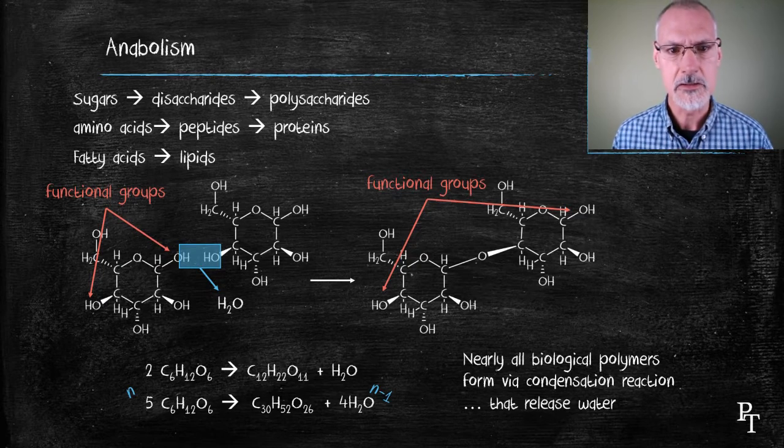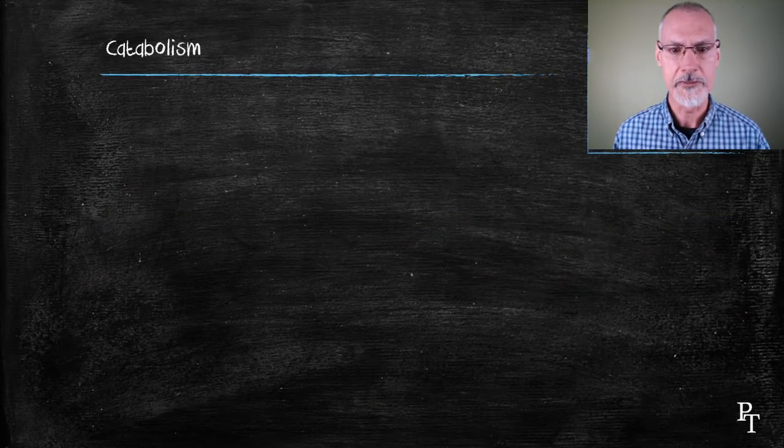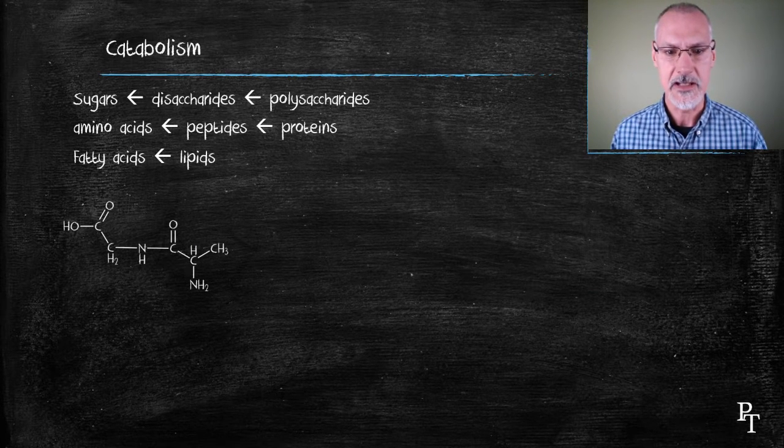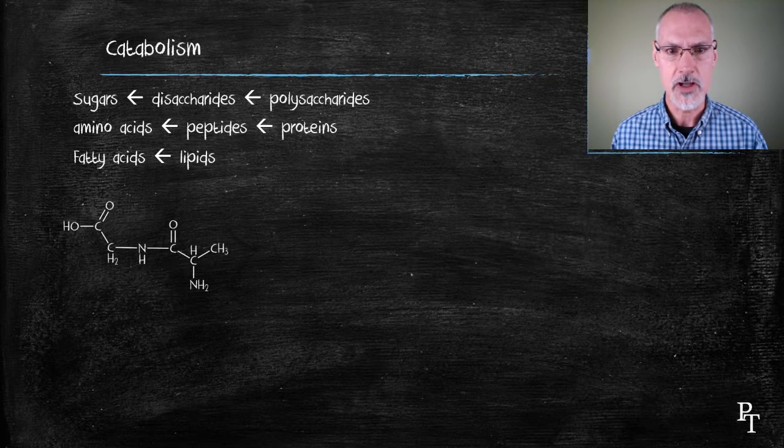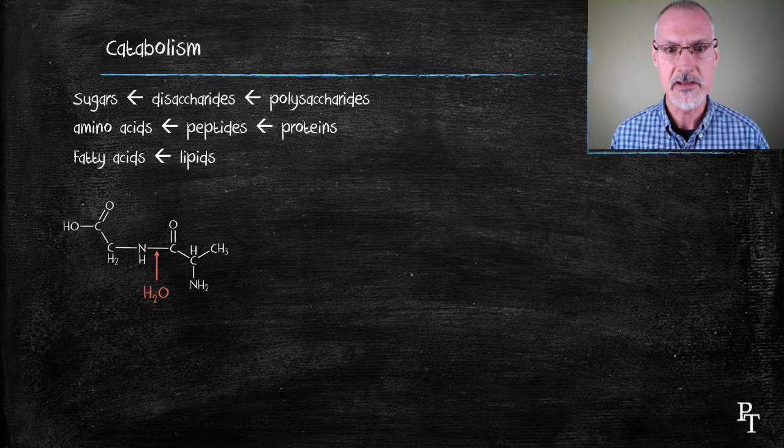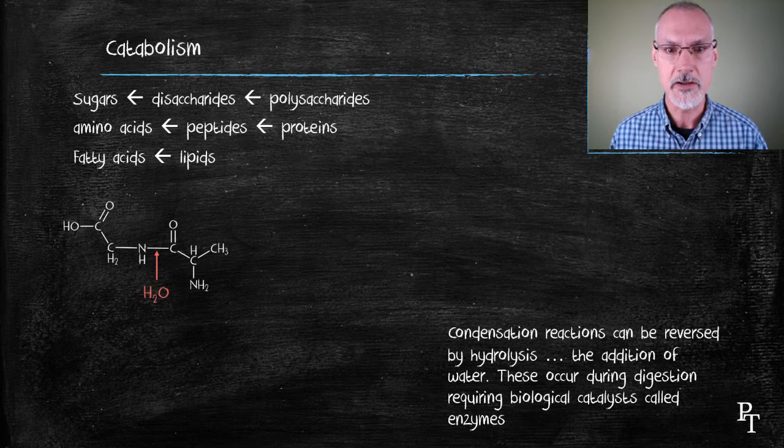Now let's take a look at the reverse process. Catabolism, where we take our larger molecules and break them down. In my example here, I'm going to take what's called a dipeptide and break it down into amino acids by the addition of water. That addition of water, the reverse of condensation, is hydrolysis. It comes from the word meaning water breaking.